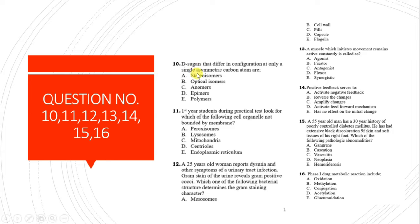Question 10: Sugars that differ in configuration at only one asymmetric carbon atom are called epimers. They differ at only one asymmetric carbon atom, such as D-glucose and D-galactose, which differ only at carbon number 4.